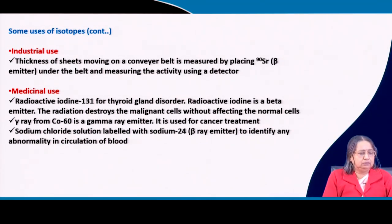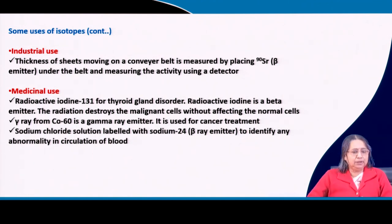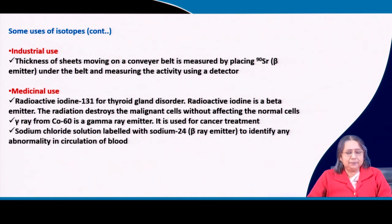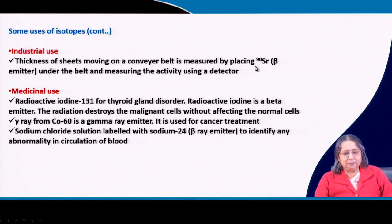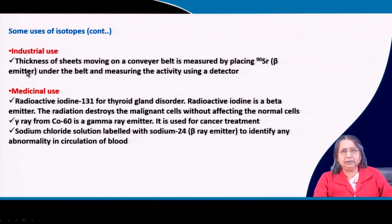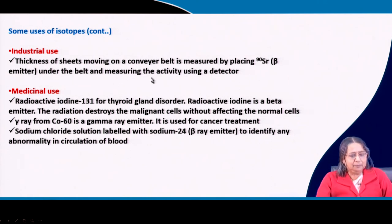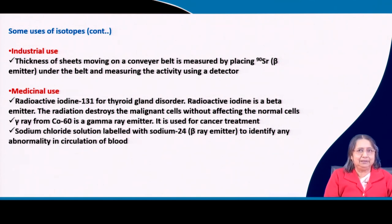For industrial use, the thickness of sheets moving on a conveyor belt can be measured. Strontium-90, a beta emitter, is placed under the belt and the transmitted activity is measured using a detector. As the belt becomes thinner over time, the detected activity changes, allowing you to know the thickness.